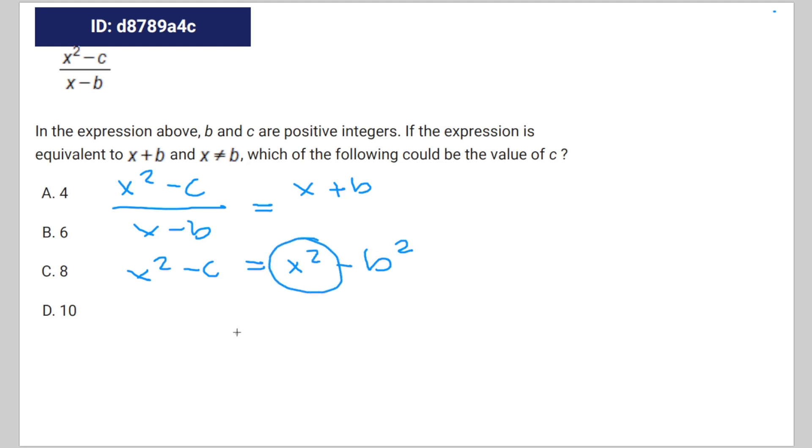You can remove the x squared from both sides of the equation to get c is equal to b squared, which means that the square root of c is equal to b.